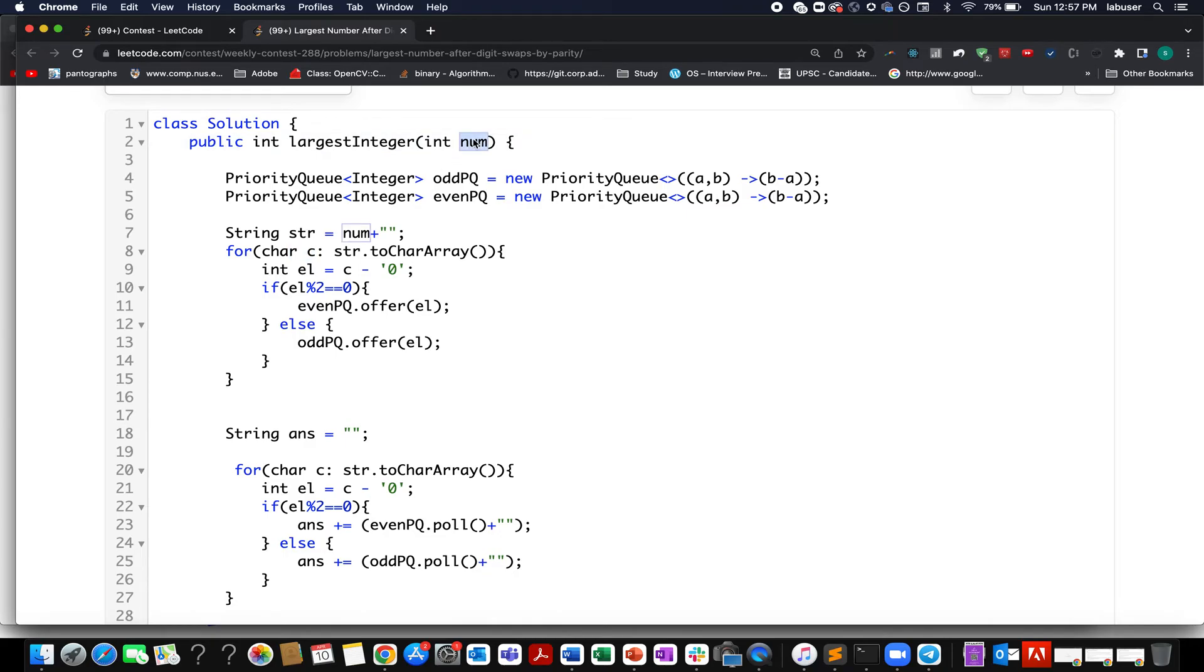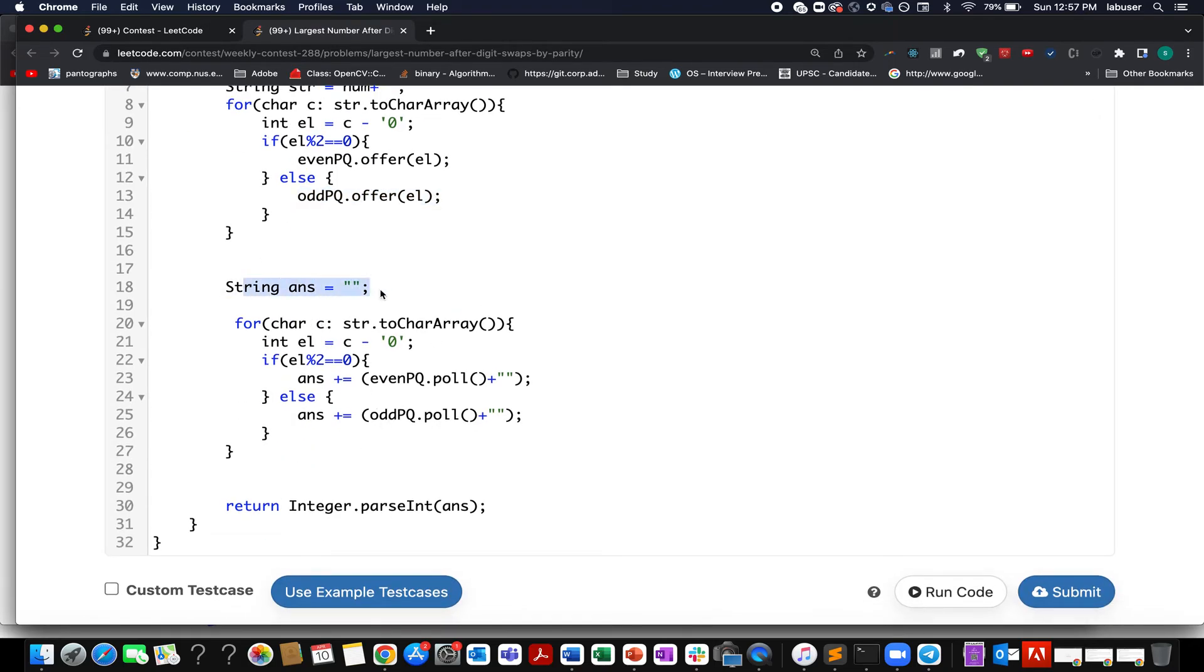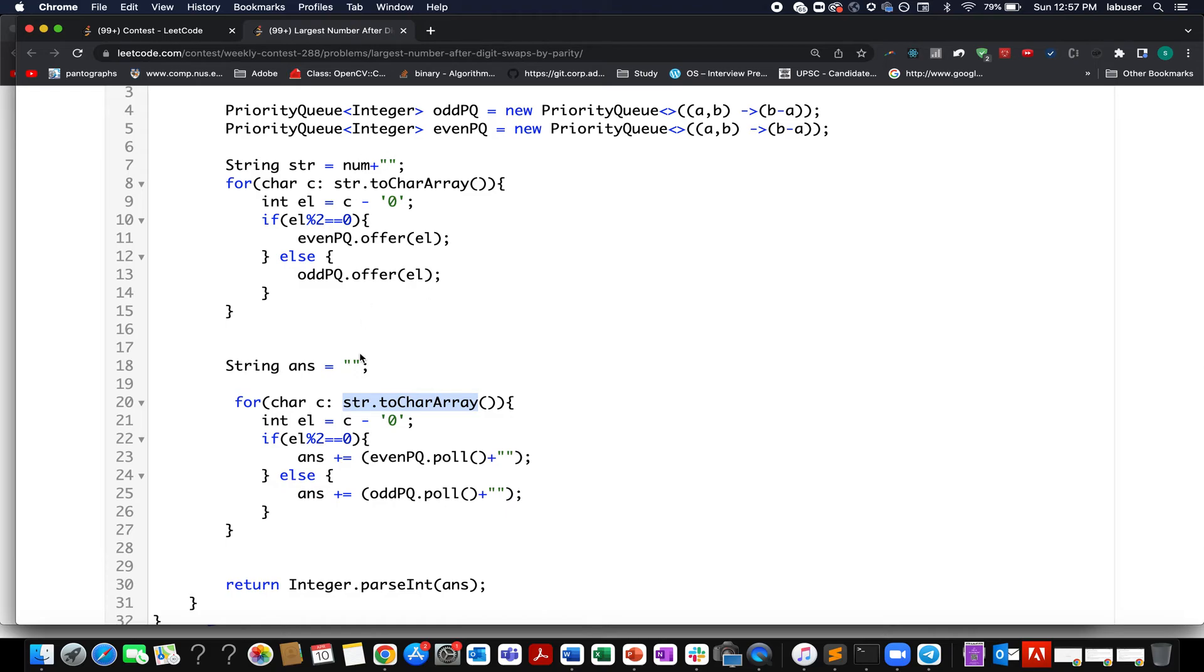I iterate through each and every character of my nums integer value. I extract that digit and I check if it happens to be even in nature or odd in nature. If it happens to be even, I add it to even priority queue. If it's odd, I add it to the odd priority queue. Now comes the interesting part: I'm interested in building the final output string, so I restart the iteration over my string.